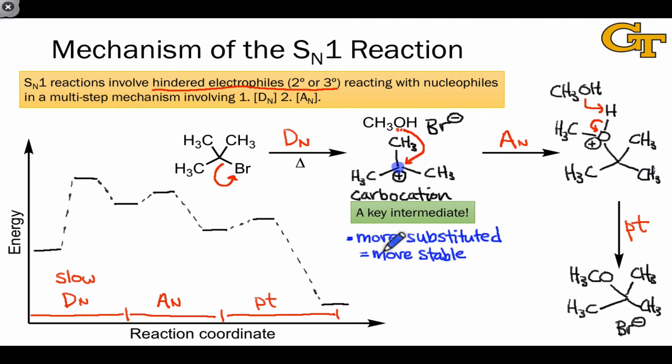The two key points here are that more substituted carbocations are more stable, which means that tertiary carbocations are common in these reactions, secondary carbocations are possible but not as common, and primary and methyl carbocations are completely off limits in SN1 reactions and do not form.